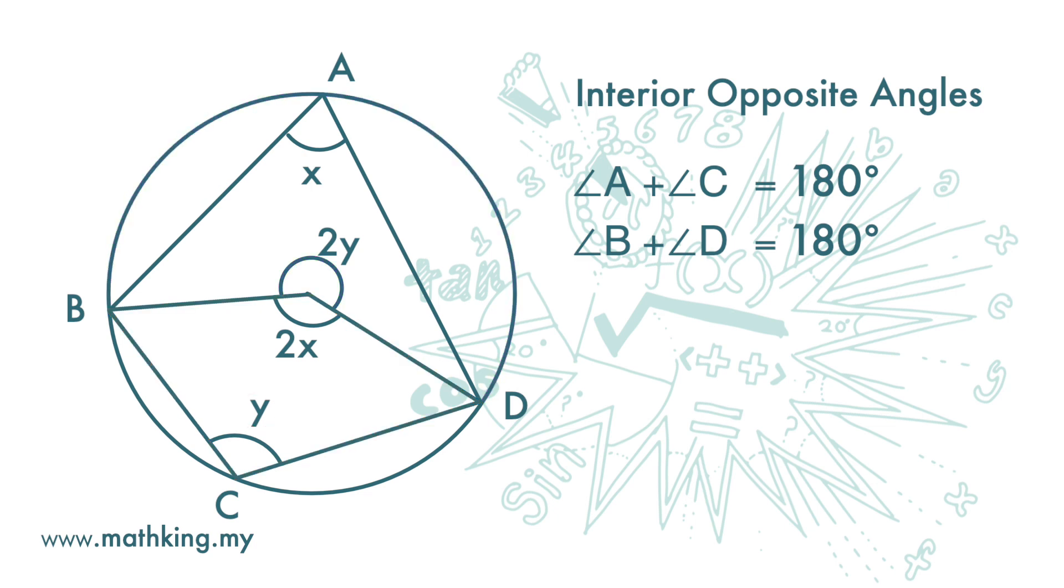Now let's look at the center. We have 2x plus 2y, and one full turn is 360 degrees. So 2x plus 2y equals 360 degrees, and x plus y must be 180 degrees.